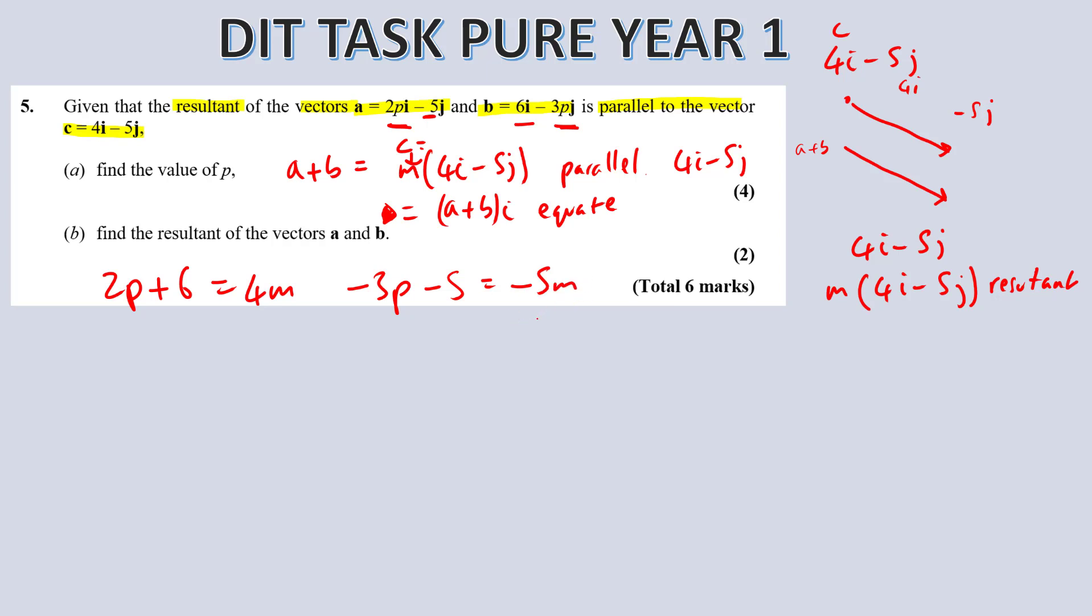This is equating the components for i. This is i, this is j. So we've got two equations here. So we have to use simultaneous equations. And then you can cancel out m or p. So what's easier? Let's times this by 5. Let's times all this by 4. So what we're going to get is minus 12p minus 20 equals minus 20m. That times by 5 is 10p plus 30 equals 20m. That's equation 2.